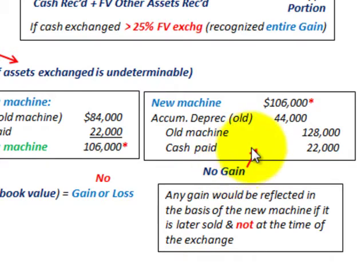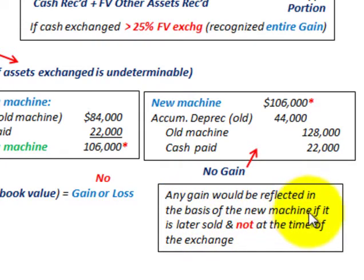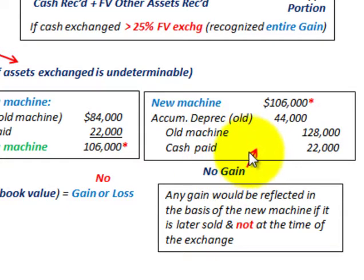You can see there is no gain recognized when we couldn't determine the fair value on the exchange. Any gain in the future would be reflected in the basis of the new machine if it is later sold, not at the time of the exchange. In this case, we didn't recognize any gain because we didn't know what the fair value was — that's how we handle this situation where fair value is unknown.